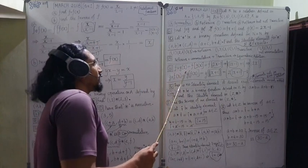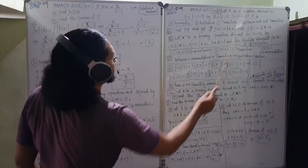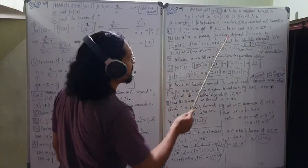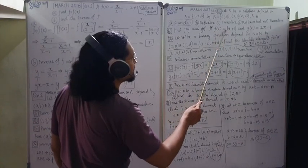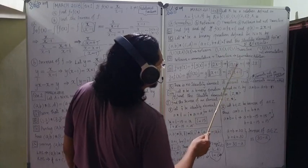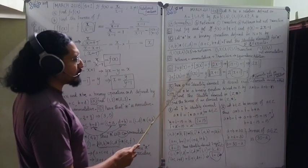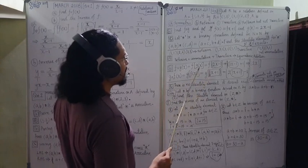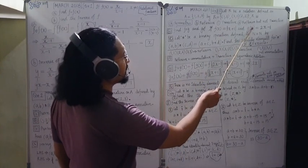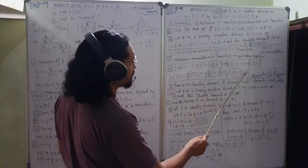Then comes: find f(g(x)) and g(f(x)). If f(x) = |x+1| and g(x) = 2x−1, then f(g(x)) = f[g(x)] = f[2x−1] = |2x−1+1| = |2x|. And g(f(x)) = g[f(x)] = g[|x+1|] = 2|x+1| − 1. That is the answer.